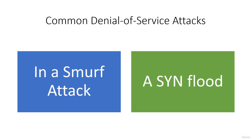A SYN flood occurs when an attacker sends a request to connect to a target server but does not complete the connection. This exploits what is known as the three-way handshake, a method used in TCP/IP networks to create a connection between a client and server. The incomplete handshake leaves the connected port in an occupied status and unavailable for further requests. The attacker continues to send requests, saturating all open ports so that legitimate users cannot connect.